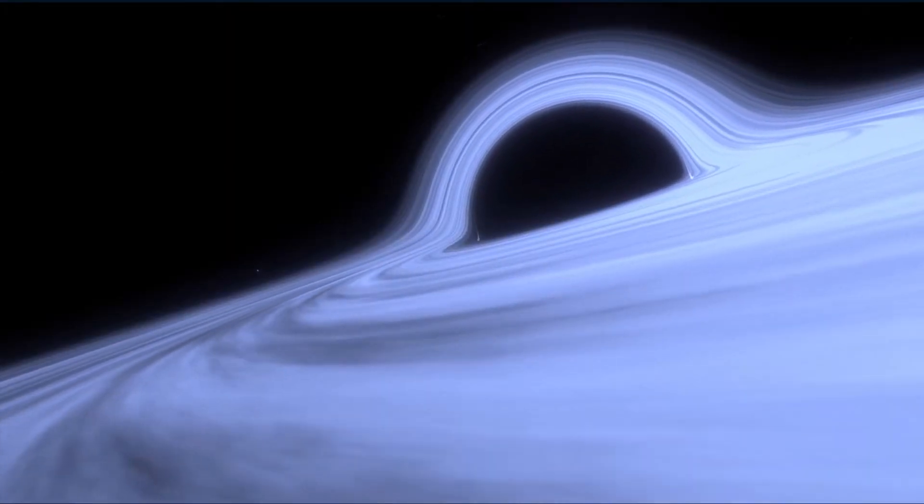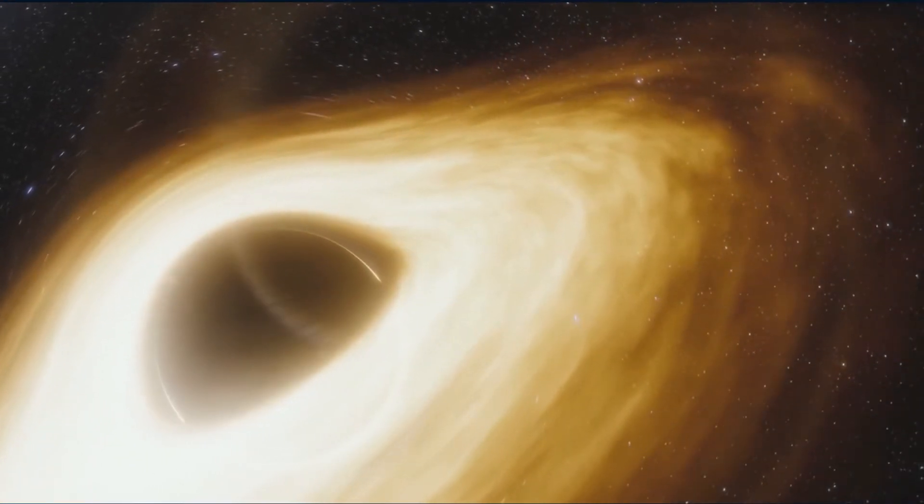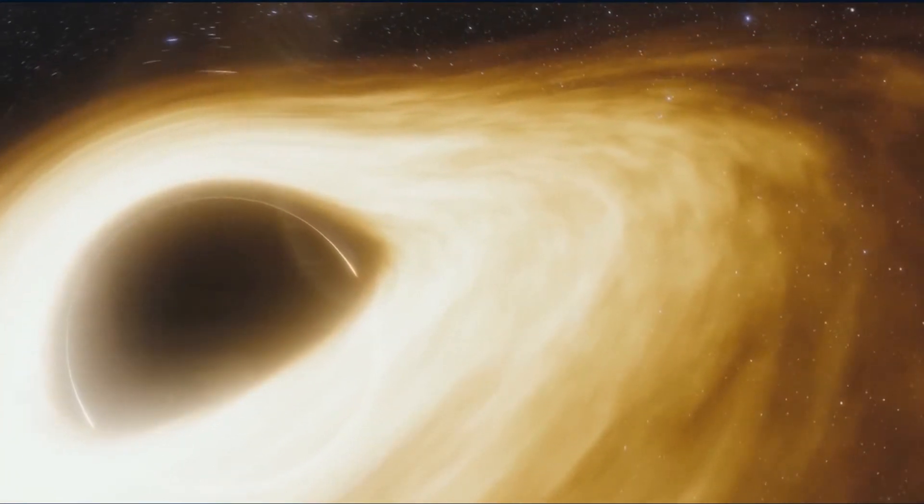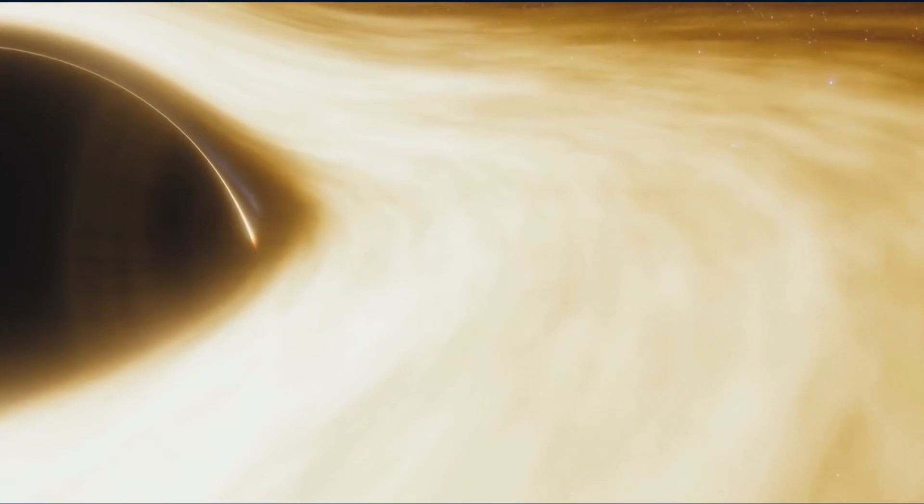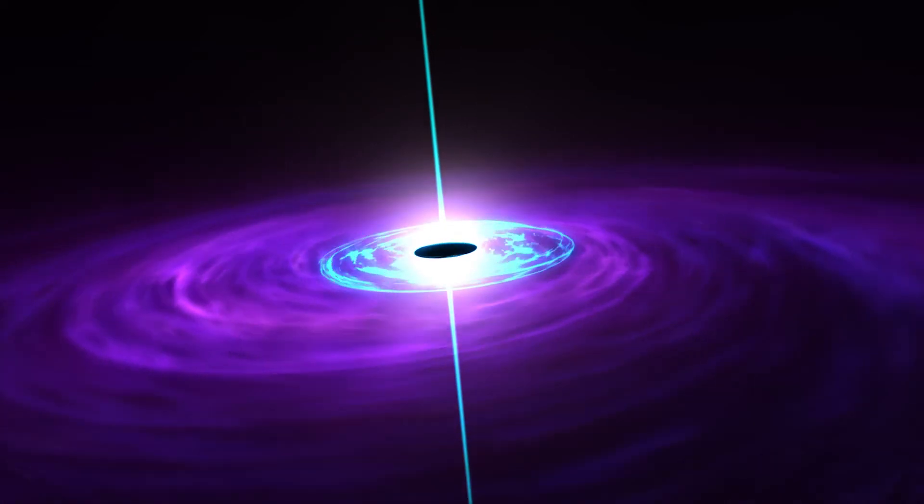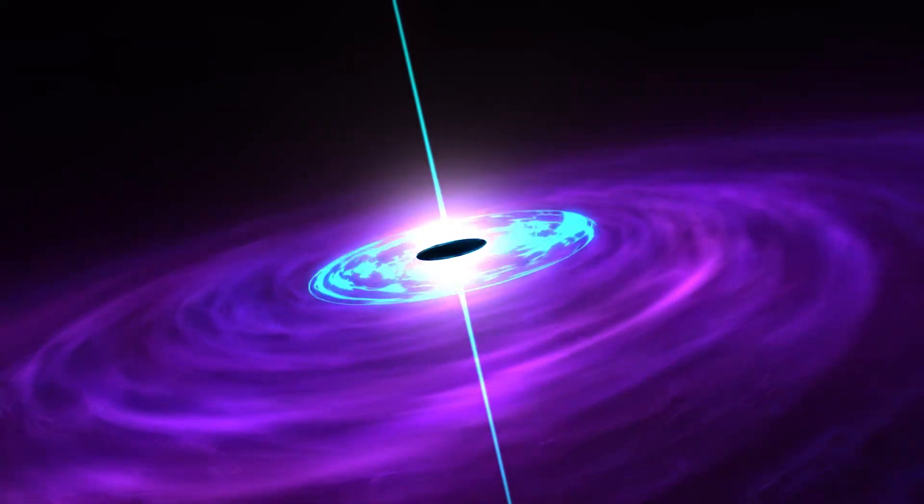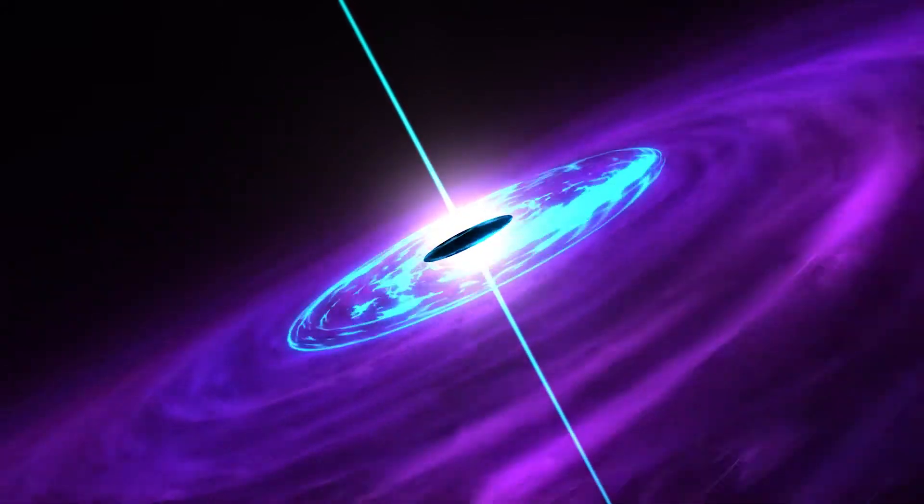Every space enthusiast knows that black holes are insanely huge. Black holes have been found with a mass equivalent to millions of suns, but recently scientists have discovered a black hole whose mass is equal to 34 billion suns. The black hole has been named J2157 and it is 8000 times more massive than Sagittarius A, our local black hole.